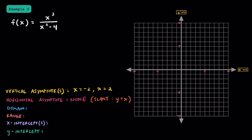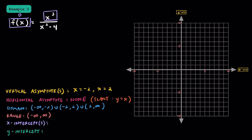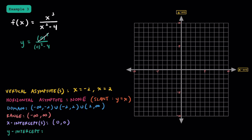For our domain, all x values are okay except for negative 2 and positive 2, so we can say negative infinity to negative 2, negative 2 to positive 2, and positive 2 to infinity. Since we didn't have a horizontal asymptote, our range isn't restricted, so we can say all real numbers. To find our x-intercept, we set the numerator equal to 0. x cubed equals 0, so x equals 0 — our x-intercept is at the origin. And for our y-intercept, substituting x = 0, we get 0 cubed over 0 squared minus 4, which gives y = 0 over negative 4. Our y-intercept is also at the origin.